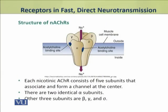Now we shall discuss the structure of nicotinic acetylcholine receptors. Each nicotinic acetylcholine receptor consists of five subunits which associate and form a channel at the center. There are two identical alpha subunits and the other three subunits include the beta, gamma and sigma subunits.